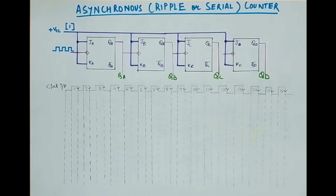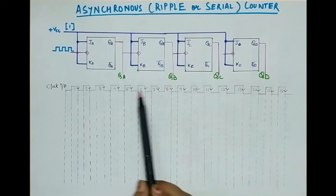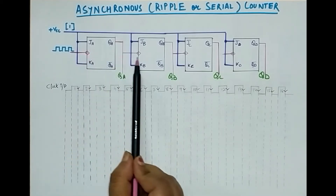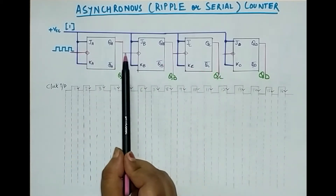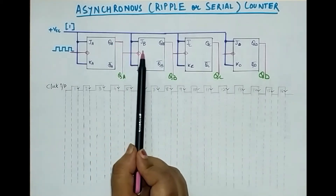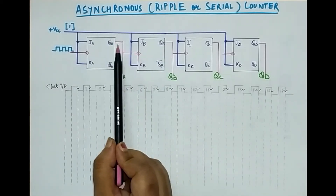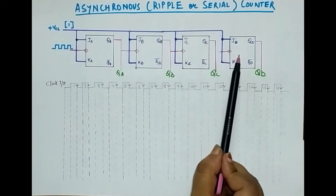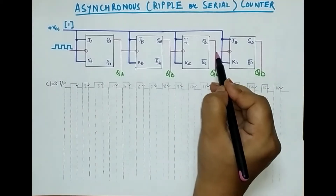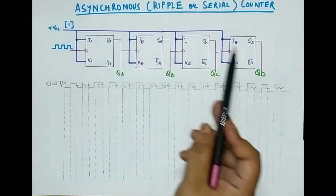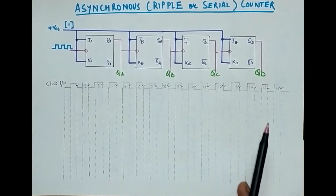As you remember in the previous class I have told you what is an asynchronous counter. In an asynchronous counter we are giving clock pulse only to the first flip-flop, and to the other flip-flops the clock pulse is going from the output of the previous flip-flops. So to this flip-flop the clock pulse is going from the output of this one, again to this one from the output of this, and so on. In this way it is an asynchronous counter.